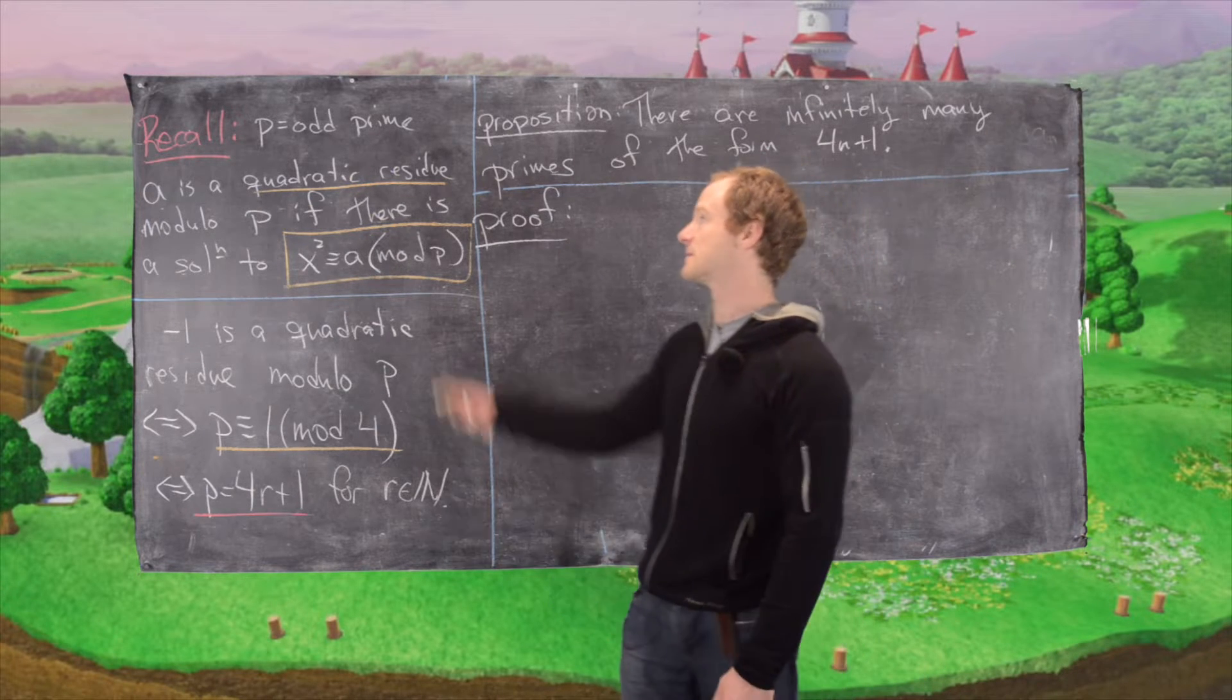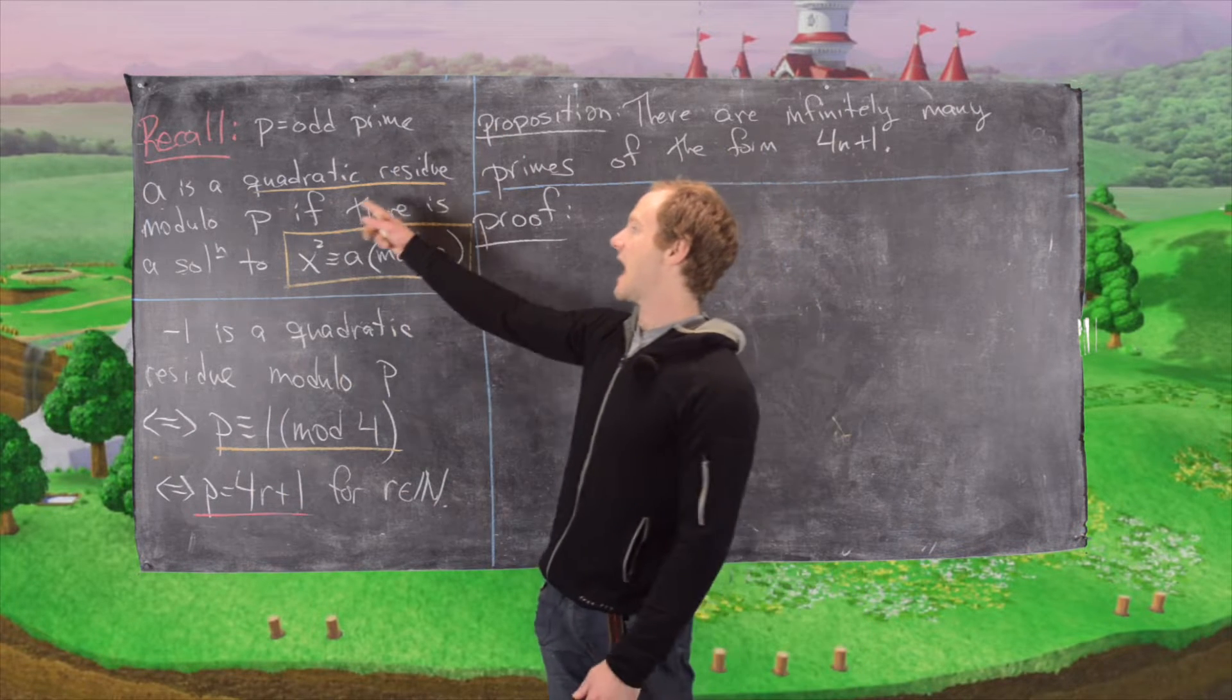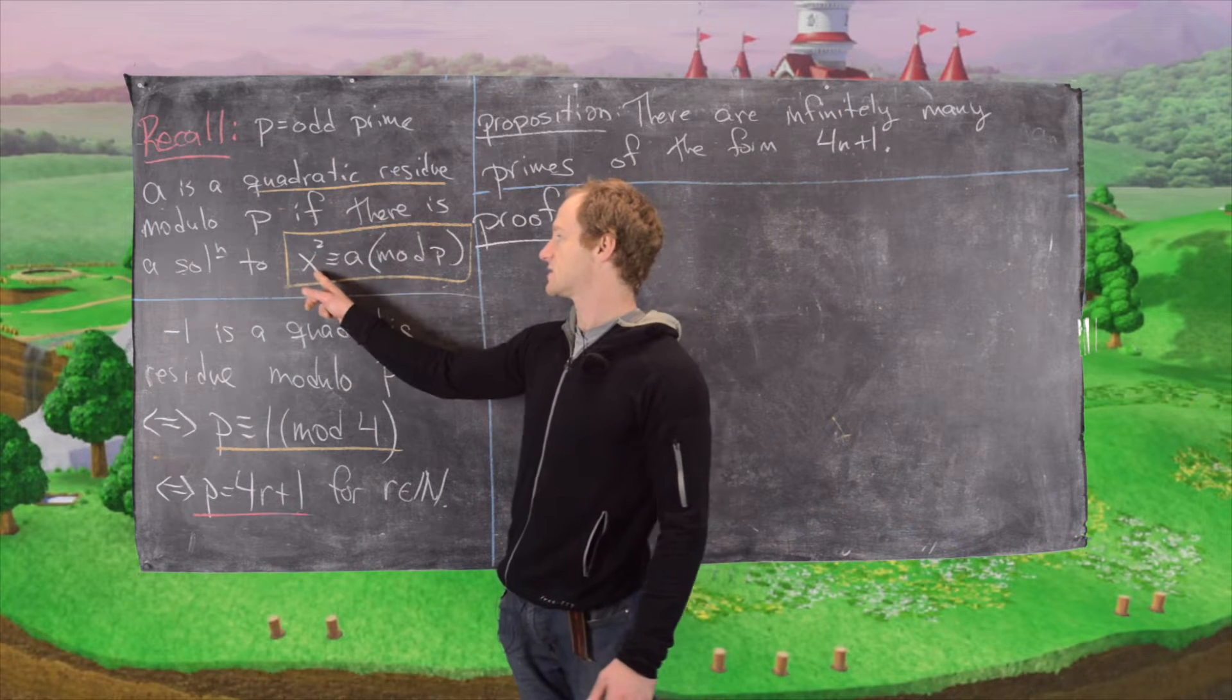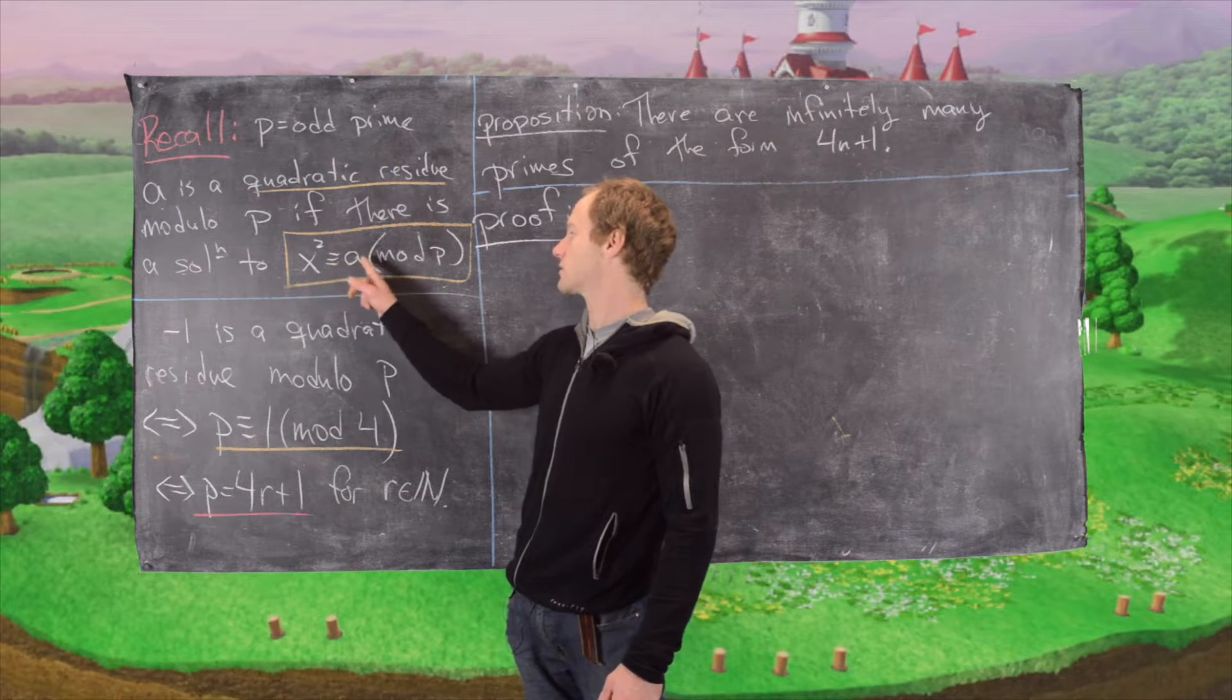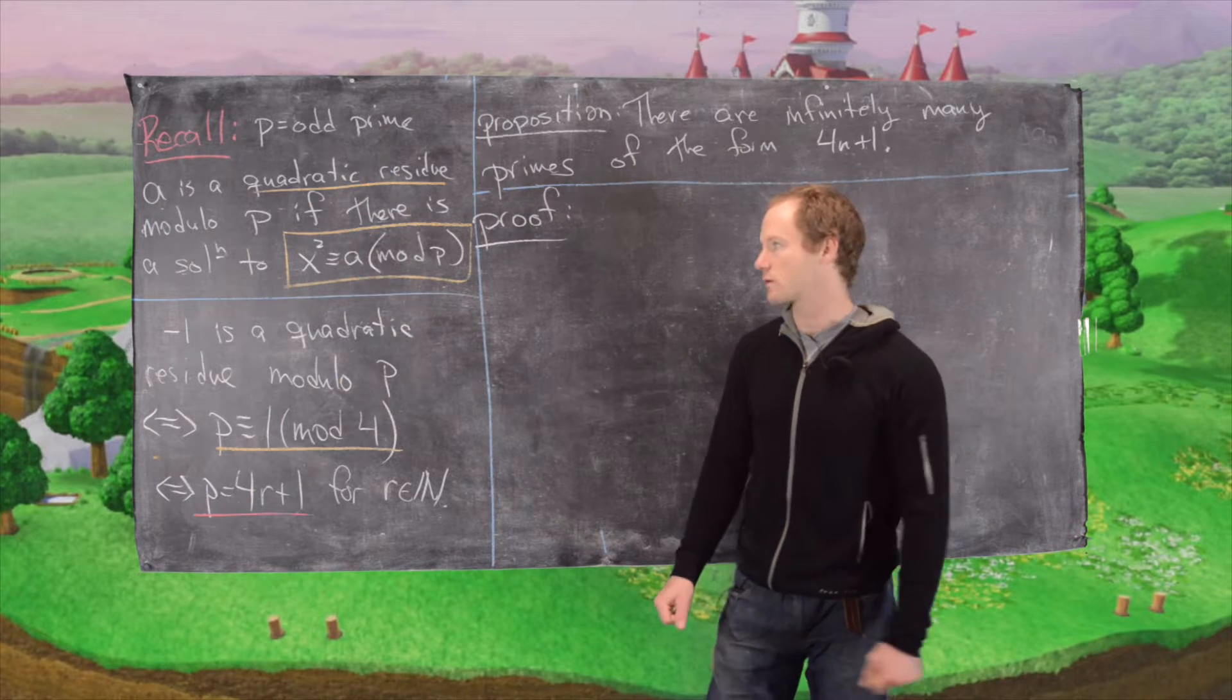We need a couple of tools in this case that we didn't need in the last case. If we have p is an odd prime, we say that a is a quadratic residue modulo p if there is a solution to x squared congruent to a mod p. In other words, if there's something like a square root of a mod p.